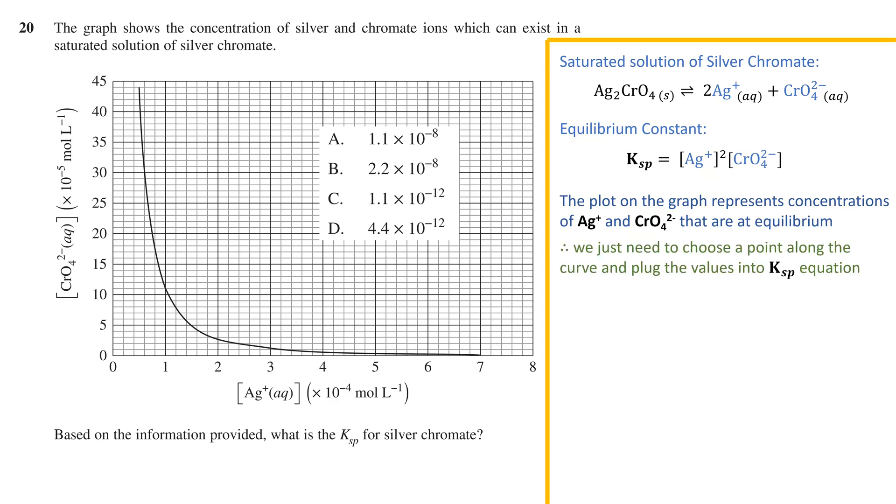Therefore, we can pick any pair of concentrations along this curve and plug those values into our Ksp expression above. To make the maths easier, we can choose a concentration of silver ions such that we have a 1 in the value. In this case, we choose 1 times 10 to the negative 4 moles per liter. If we match this up against the curve, we see that the corresponding chromate ion concentration is just above 10 times 10 to the negative 5 moles per liter. We will say that it is about 11 times 10 to the negative 5 moles per liter.